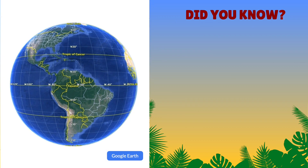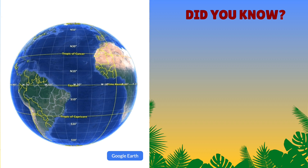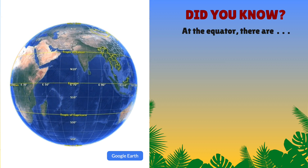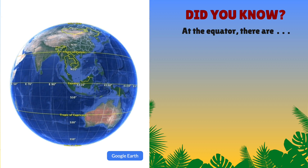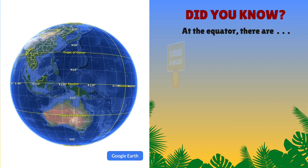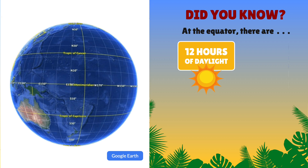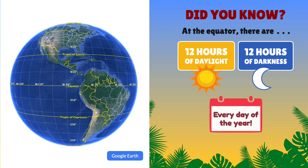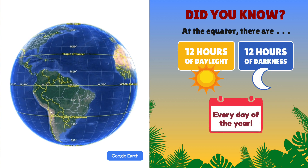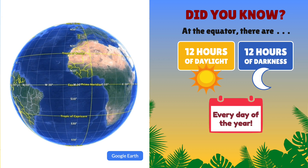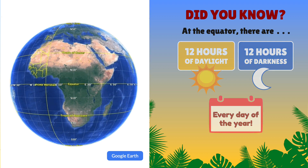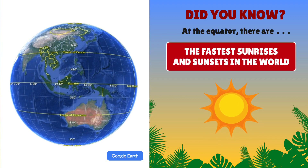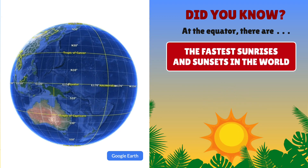Time for a couple of fun facts. Did you know that at the equator, there are almost exactly 12 hours of daylight and 12 hours of darkness every day of the year? However, the equator also has the fastest sunrises and sunsets in the world.